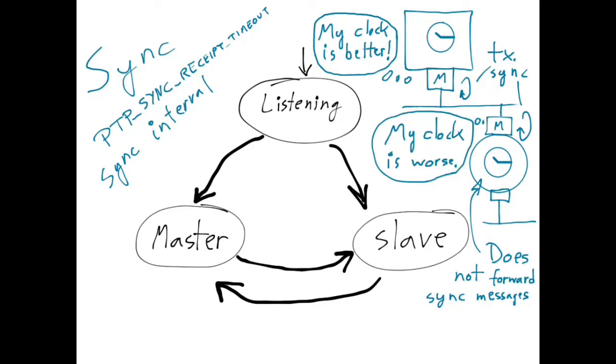The latter would stop transmitting sync messages and become a slave, while the other would remain as the master.